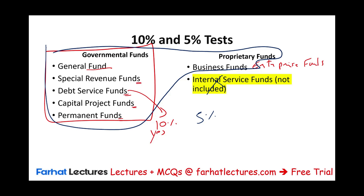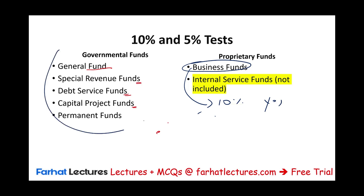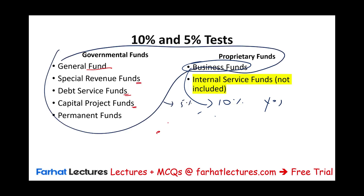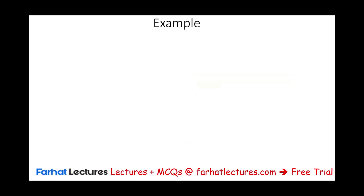The first test is 10%, the second one is 5%. If we're looking at an enterprise fund, first we determine if this enterprise fund represents 10% of the total enterprise funds. If yes, we then look at whether it represents 5% of both governmental and business combined. If a fund meets both the 10% and the 5%, it must be reported separately to provide a clearer understanding of its activities and financial position.